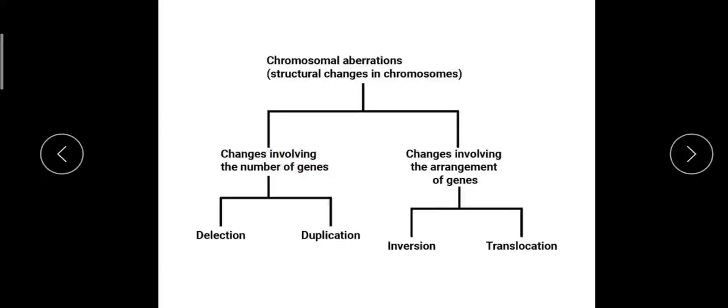Chromosomal aberrations can be of two types: structural aberration and numerical aberration. Structural aberration denotes any variation in the structure of a chromosome, while any variation in the number of genes we call as ploidy changes or numerical aberration.